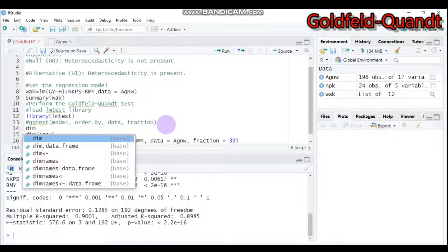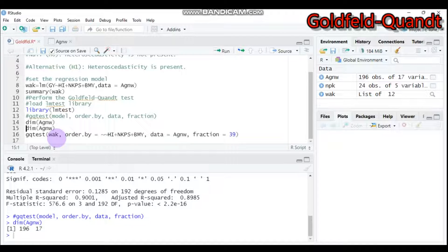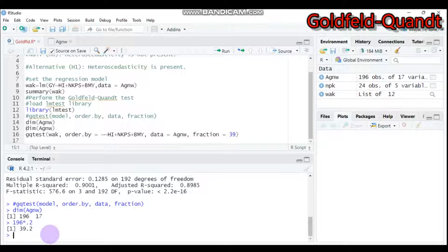Let's see our observation. Our data has 196 observations, so 196 times 0.2 equals around 39 observations that will be removed from our dataset. The fraction means 20% of our total observation. In our case, total observation is 196, so 196 times 20% is around 39.